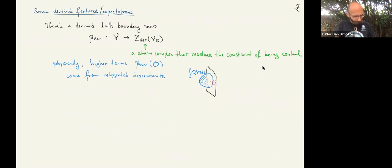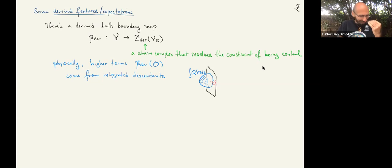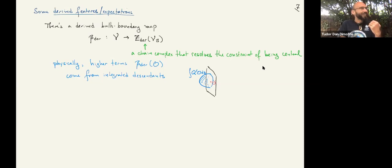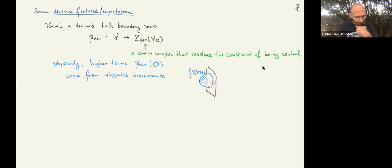There are cool categorical and derived aspects of the bulk-boundary map. In topological field theory, one learns that given a generator of a category of boundary conditions, there's an isomorphism from the bulk algebra to the Hochschild cohomology of the boundary. We can try to apply that sort of reasoning here.